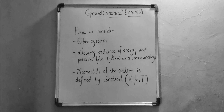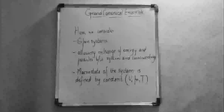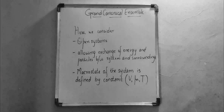Till now, in the micro-canonical ensemble we considered isolated systems where volume, energy, and number of particles are kept constant, with no exchange of energy and matter between the system and surroundings. In the canonical ensemble we considered closed systems where energy was exchanged with the surroundings, making energy a variable while keeping volume, number of particles, and temperature constant.